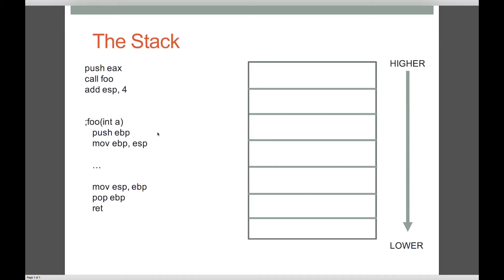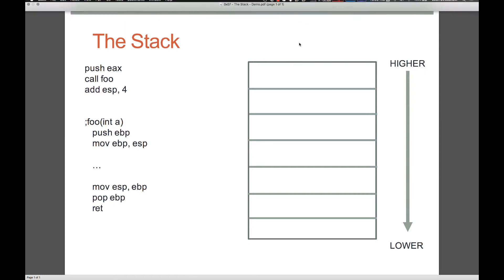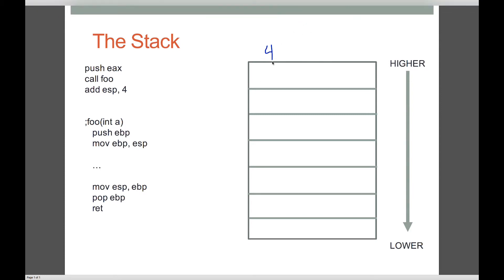Let's go through an example. There are partial bits of a program here showing the parts important for understanding the stack. The memory layout shows higher addresses to lower addresses, so the stack grows down. Each block represents four bytes — we push four bytes at a time, pop four bytes at a time, and generally deal with memory in four-byte chunks. EIP is our instruction pointer, whose job is to hold the address of the next instruction to execute.